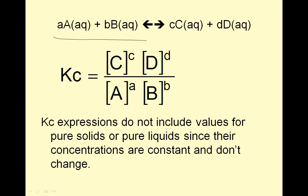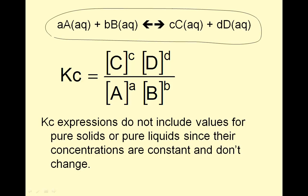Looking at the general expression: products are big C raised to little c (the coefficient), times big D raised to little d. Over reactants: big A raised to little a, times big B raised to little b. Notice all of these species are aqueous, and the state of matter does matter.